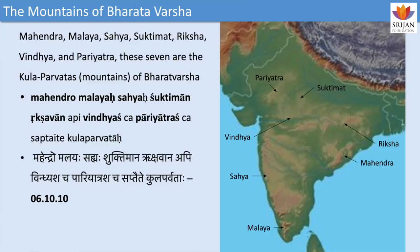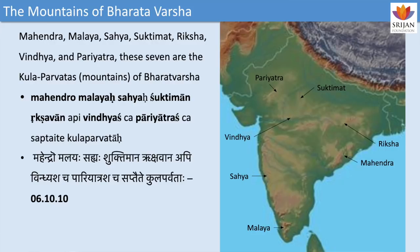Sanjaya talks about the main Kula Parvatas of Bharatavarsha: Mahendra, Malaya, Sahya, Shukthimat, Rikshavat, Vindhya, and Pariyatra. Malaya is the southern part of the Western Ghats — in Kerala. Sahya is the northern part. The gap between them is the Palakkad pass, through which people of Kerala travel to Bangalore without crossing the mountain. The Palakkad pass divides Malaya and Sahya. Sahya extends from this point in Kerala up to Maharashtra. Vindhya is the central mountain, and Pariyatra refers to the western mountains in Rajasthan.